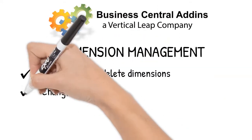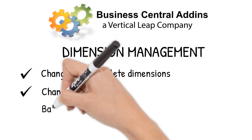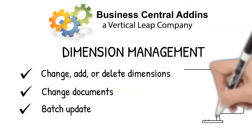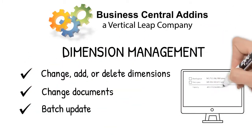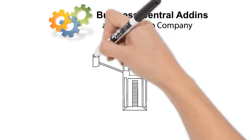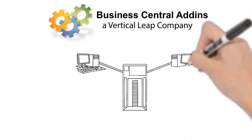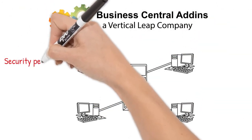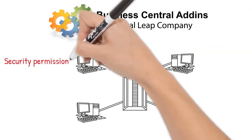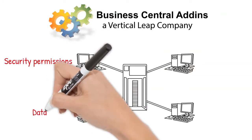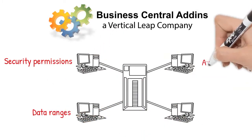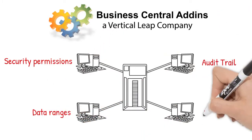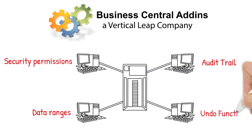In fact, you can even change documents from a filtered list and batch update them all at the same time. We know this is a powerful operation and can be dangerous in the wrong hands. So dimension management makes sure to check that the user has correct security permissions and that the date ranges are correct. It even keeps an audit trail and has an undo function just in case.